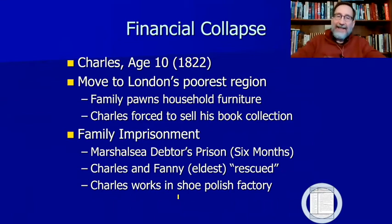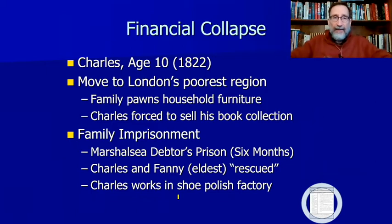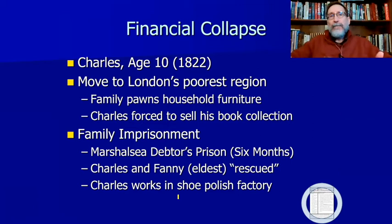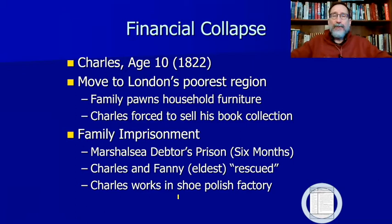The financial collapse happens when Charles Dickens is 10 years old. The five happy years are over, and the family is forced to move to London into the East End, one of the poorest regions. To get by, the family sells off their furniture, and Charles — who had a wonderful book collection for a young boy — is forced to sell off his book collection. I always think here of A Christmas Carol: with the Ghost of Christmas Past, the young Ebenezer Scrooge was left alone at his residential school when everyone else goes home for the holidays.